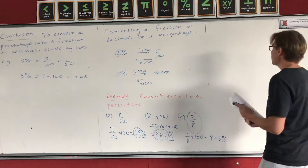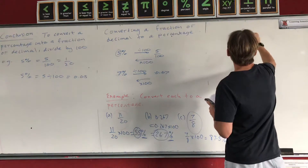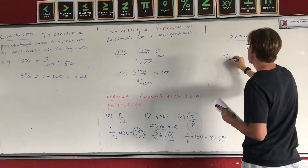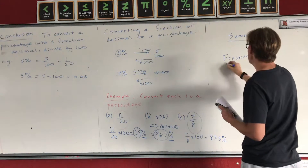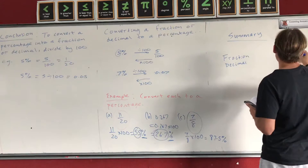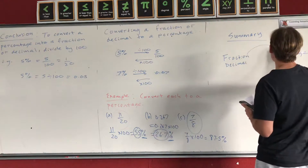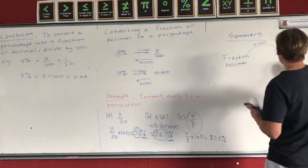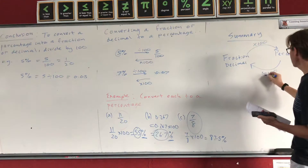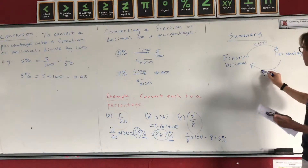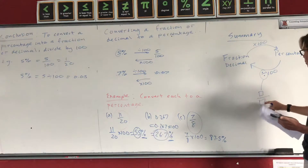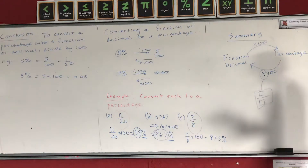This diagram summarizes everything you need to know. To go from a fraction or decimal to a percentage, multiply by 100. To go the other way — from a percentage to a fraction or decimal — divide by 100. If you want a fraction as your answer when dividing, use your fraction button on the calculator.